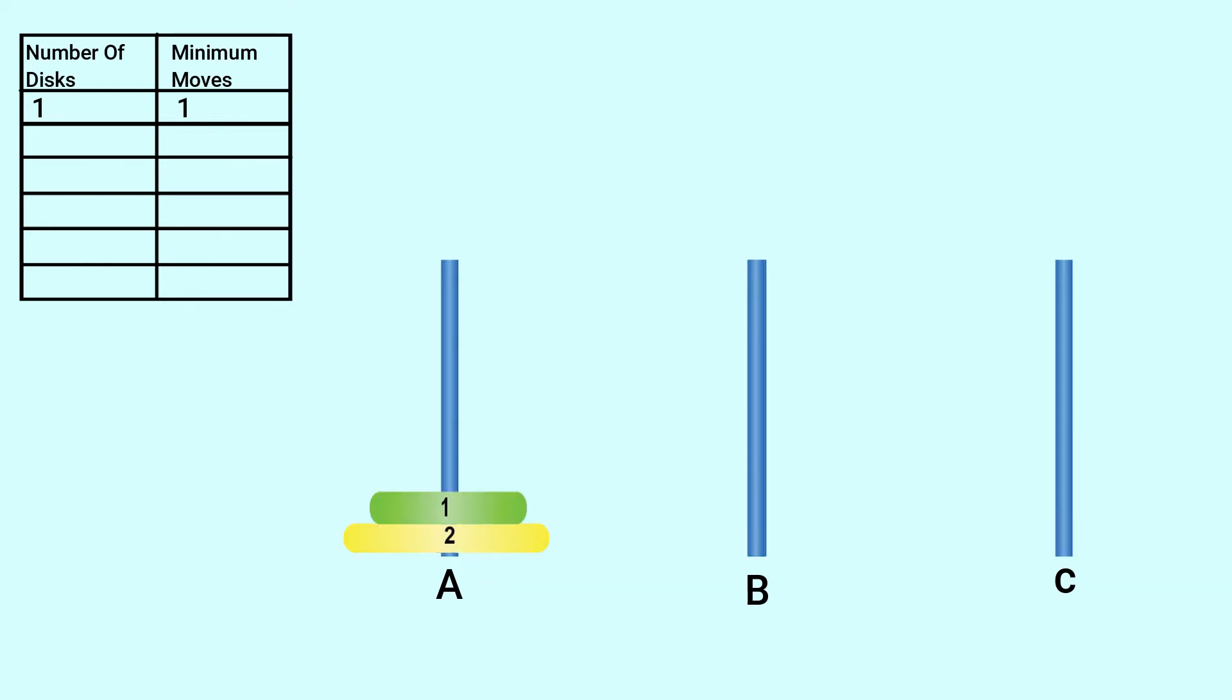Now, let us take two discs and find out minimum moves. First, move the smaller disc from A to B. Then, move the larger disc from A to C. Lastly, move the small disc from B to C. This process needs three moves. So, for two discs, minimum three moves are needed.